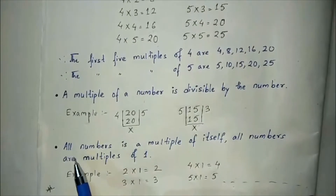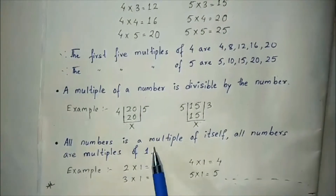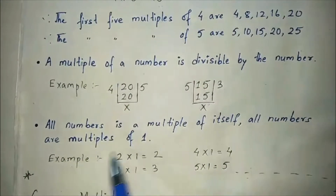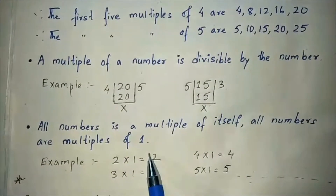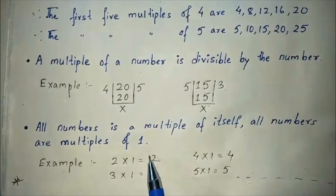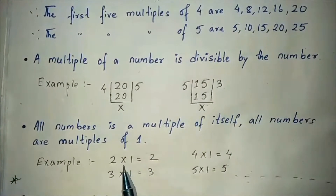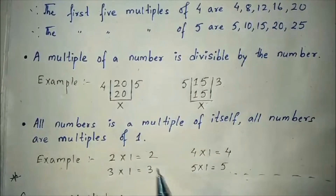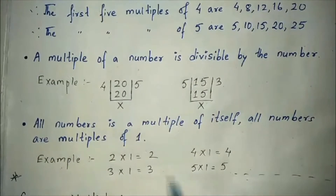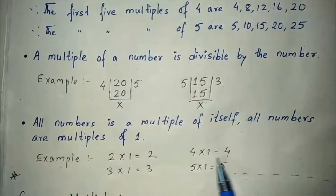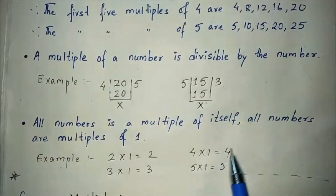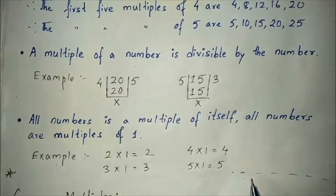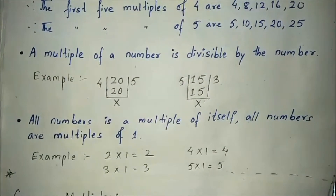Next point: every number is a multiple of itself. All numbers are multiples of 1. For example, 2×1=2, 3×1=3, 4×1=4, 5×1=5, and so on.